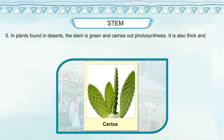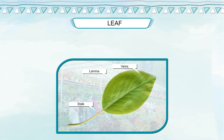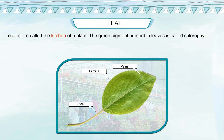In plants found in deserts, the stem is green and carries out photosynthesis. It is also thick and fleshy to store water. In climbers, stems have modified thread-like coiled growths called tendrils to twine around any support.